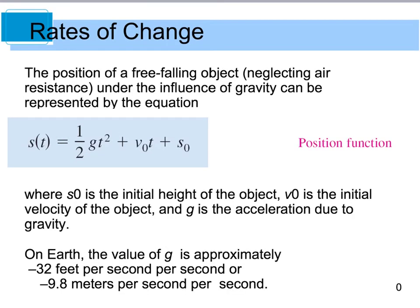As a review from algebra, the position of a free-falling object is given by S(t) = (1/2)gt² + v₀t + S₀, where S₀ is initial height, v₀ is initial velocity, and g is gravity — negative 32 ft/s² in feet or negative 9.8 m/s² in the metric system.